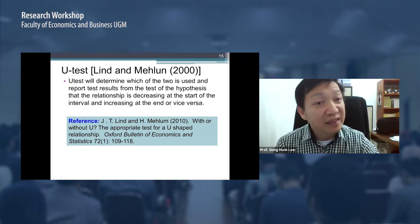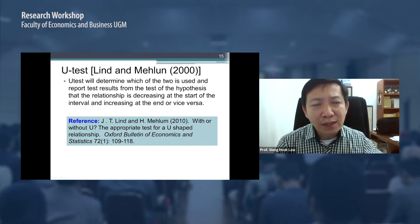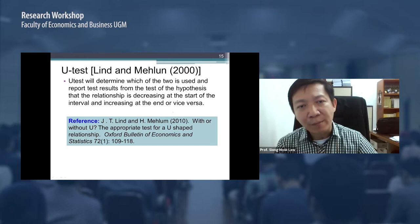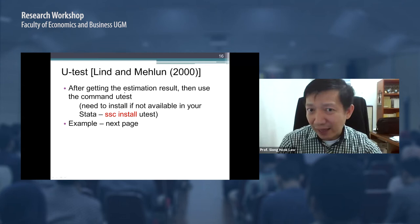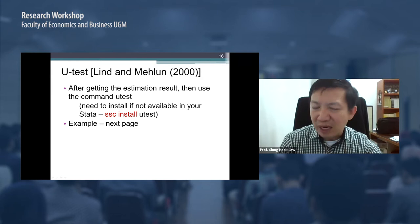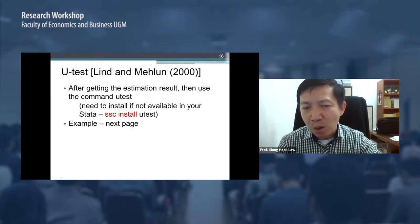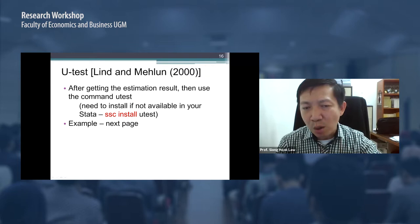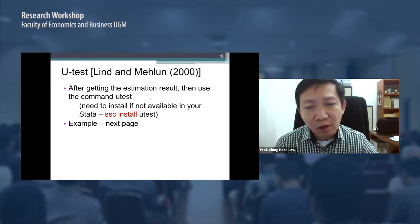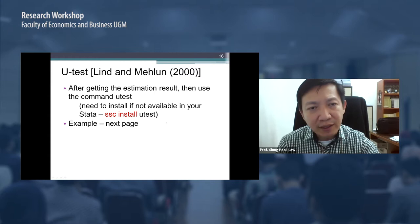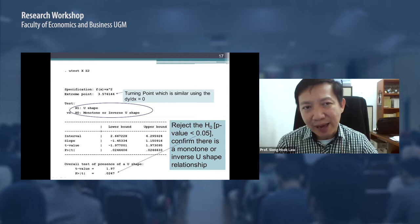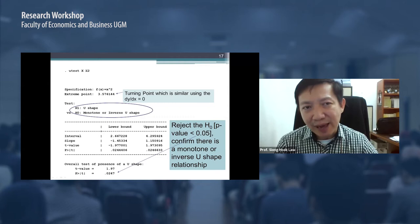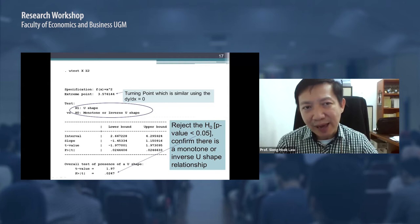The U-test reports results from which we can assess our hypothesis. The command is available in Stata — you can download it using 'ssc install'. For example, after estimating a regression with X and X-squared in the model, you type 'utest X X-squared'. The extreme point — where the first derivative dy/dx equals zero — gives you the turning point value of X on the horizontal axis.